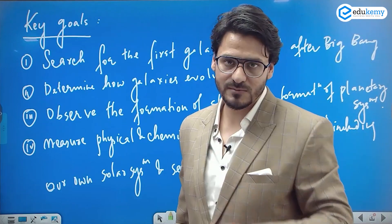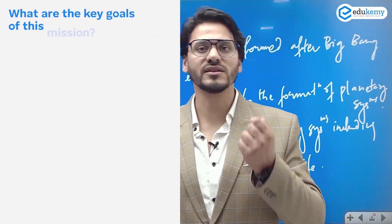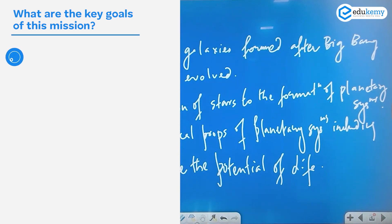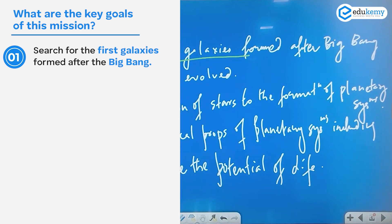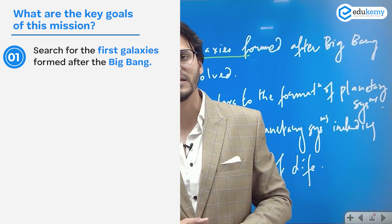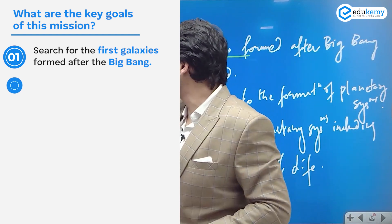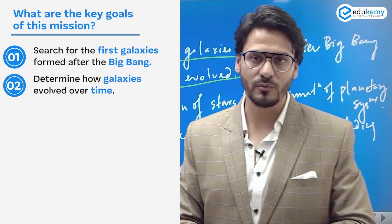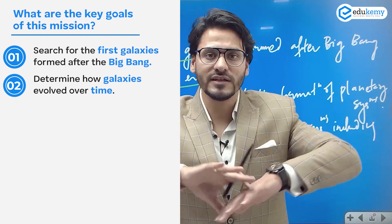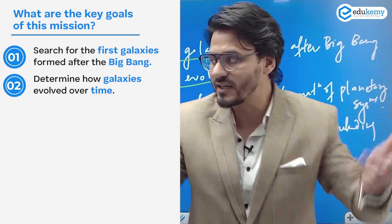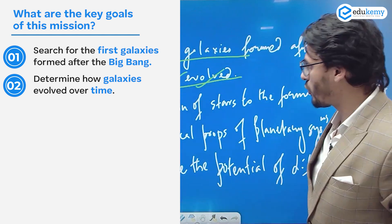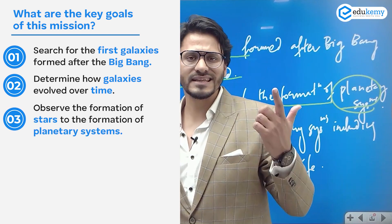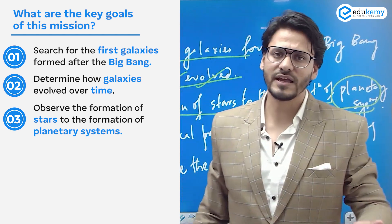Now let's look at the second part — the key goals of the James Webb Space Telescope. First, search for the first galaxies formed after the Big Bang. Second, determine how galaxies evolved over time — a concept initially explored by the Hubble Space Telescope, which showed that the space between galaxies is expanding rapidly.